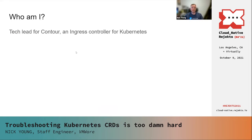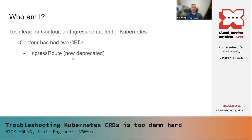Contour is relevant to this CRD discussion because we've had two CRDs across the course of our lifetime. The first was the IngressRoute CRD, which is now deprecated and replaced with the HTTPProxy CRD. We learned a lot as part of doing that, and I and the rest of the team have made a bunch of mistakes with HTTPProxy as well that I'm hoping you can learn from.